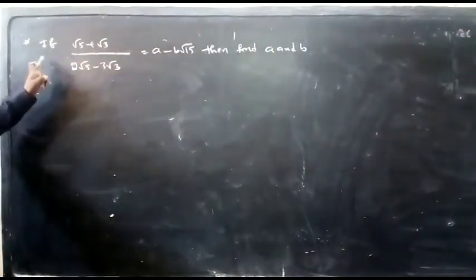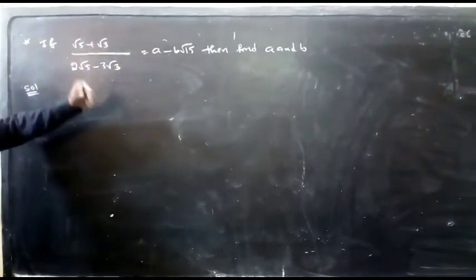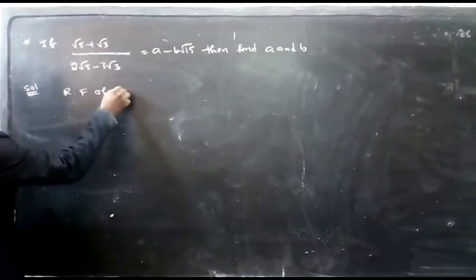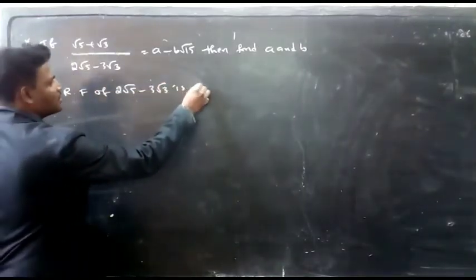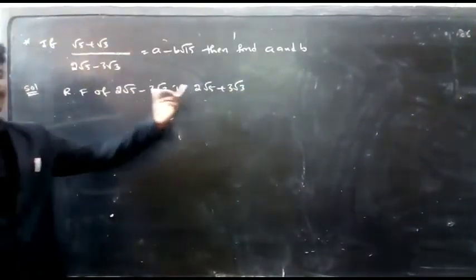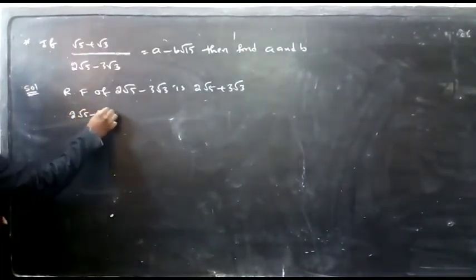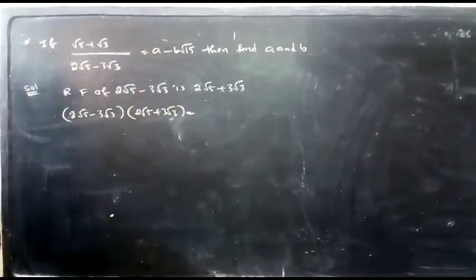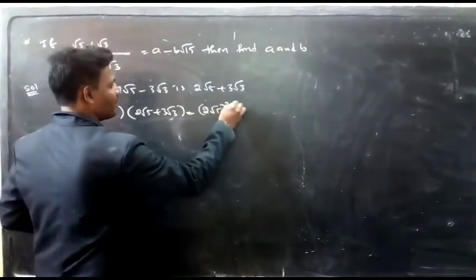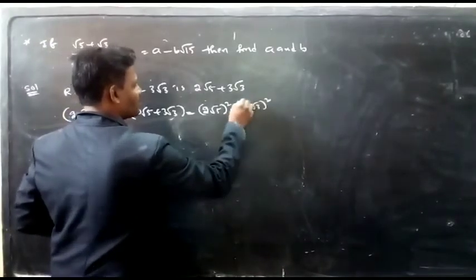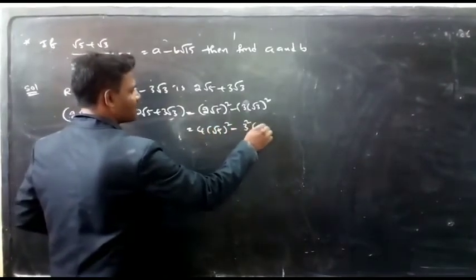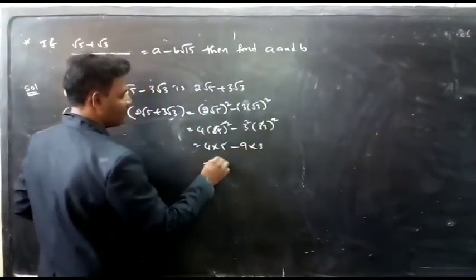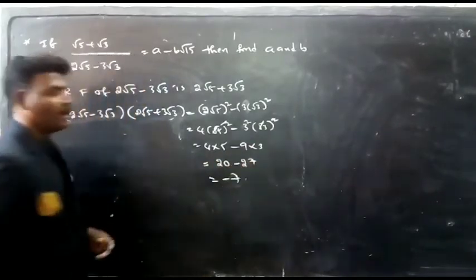This is the last question in the class. If (√5 + √3) / (2√5 − 3√3) = a − b√15, find the values of a and b. The rationalizing factor of (2√5 − 3√3) is (2√5 + 3√3). Now multiply: (2√5 − 3√3)(2√5 + 3√3) = (2√5)² − (3√3)² = 4×5 − 9×3 = 20 − 27 = −7.